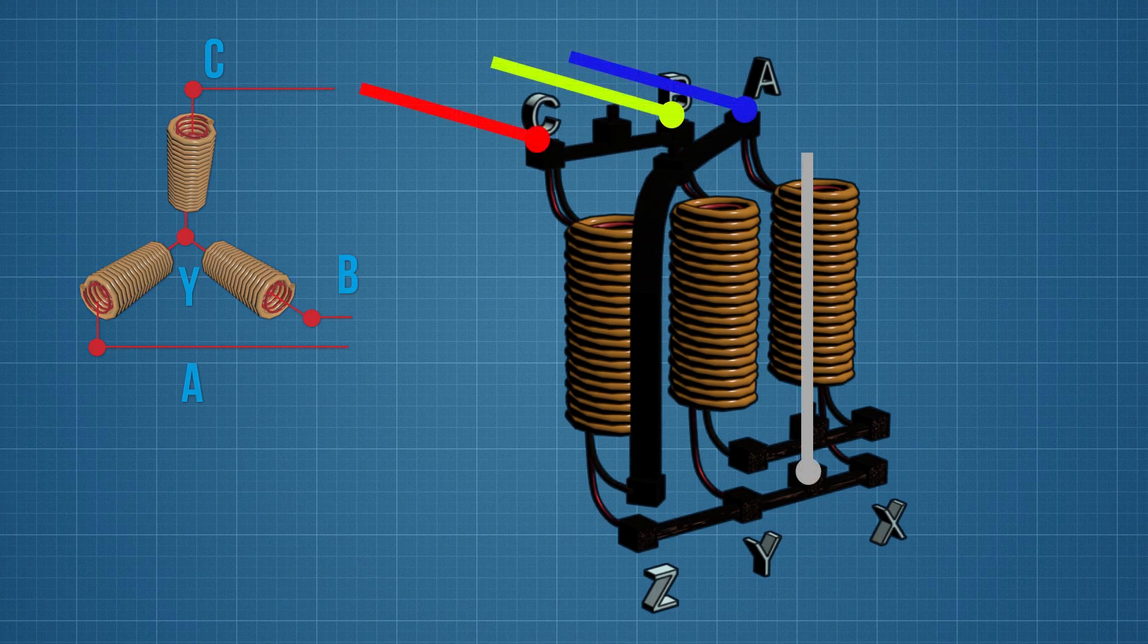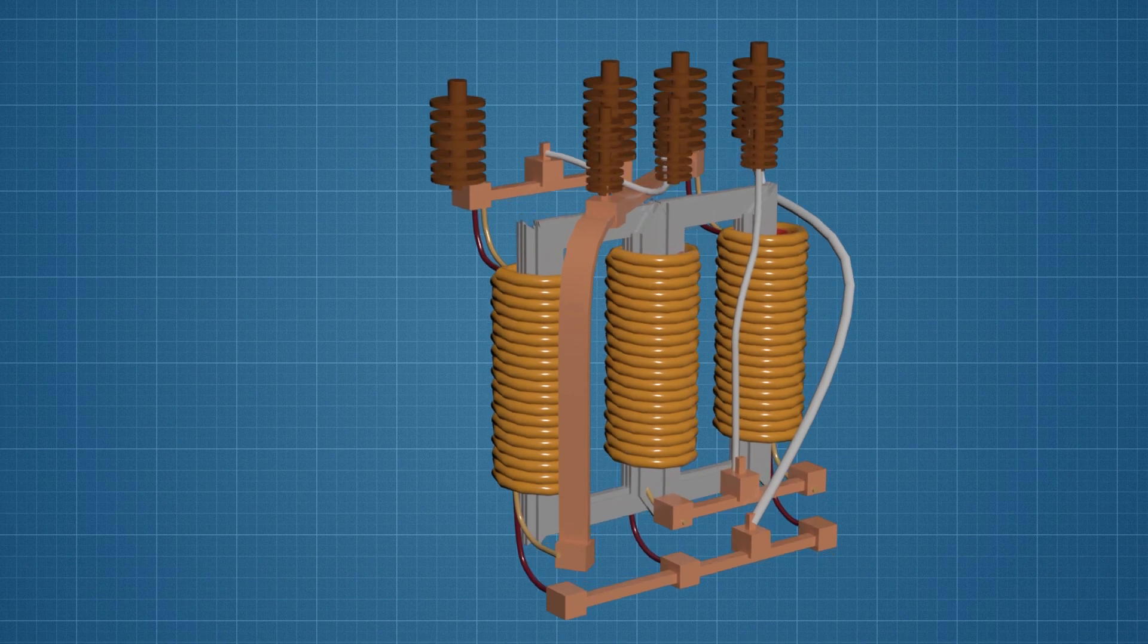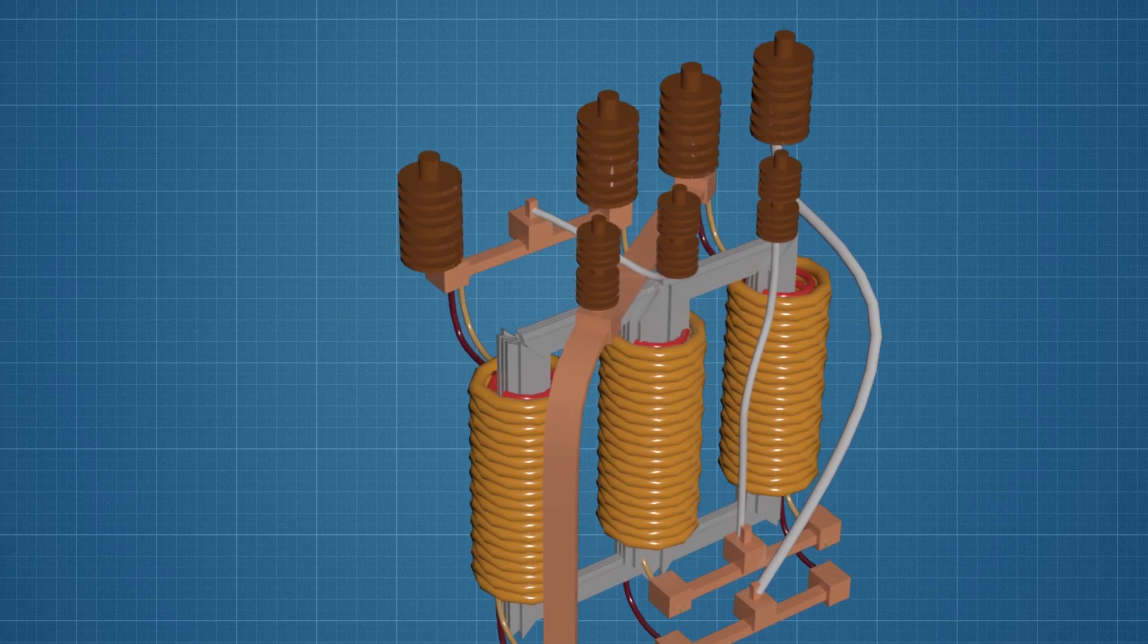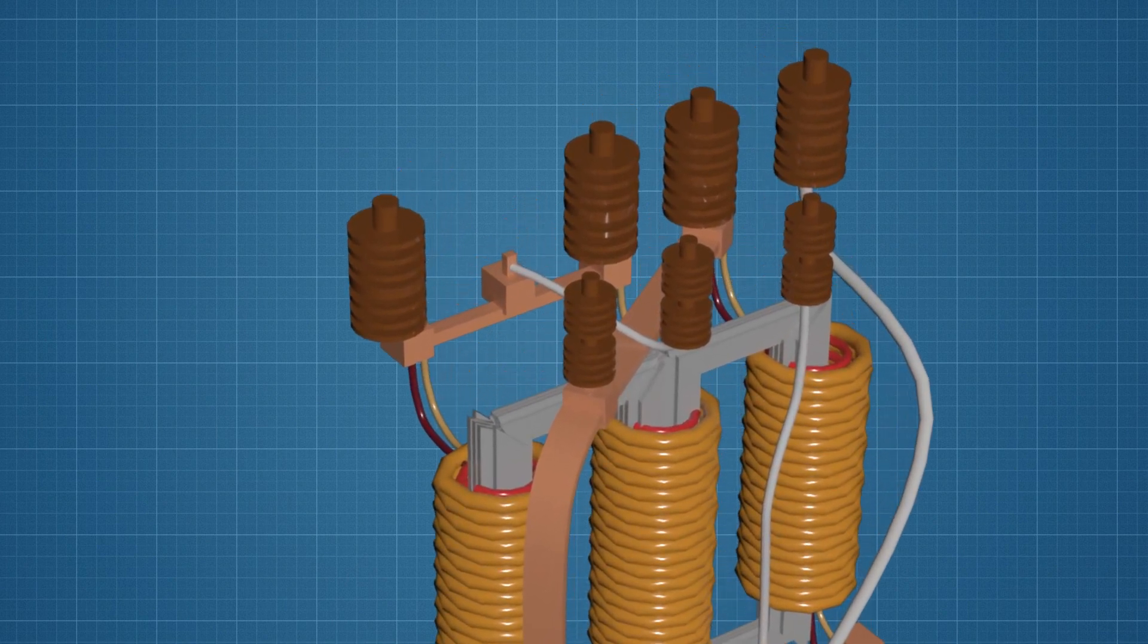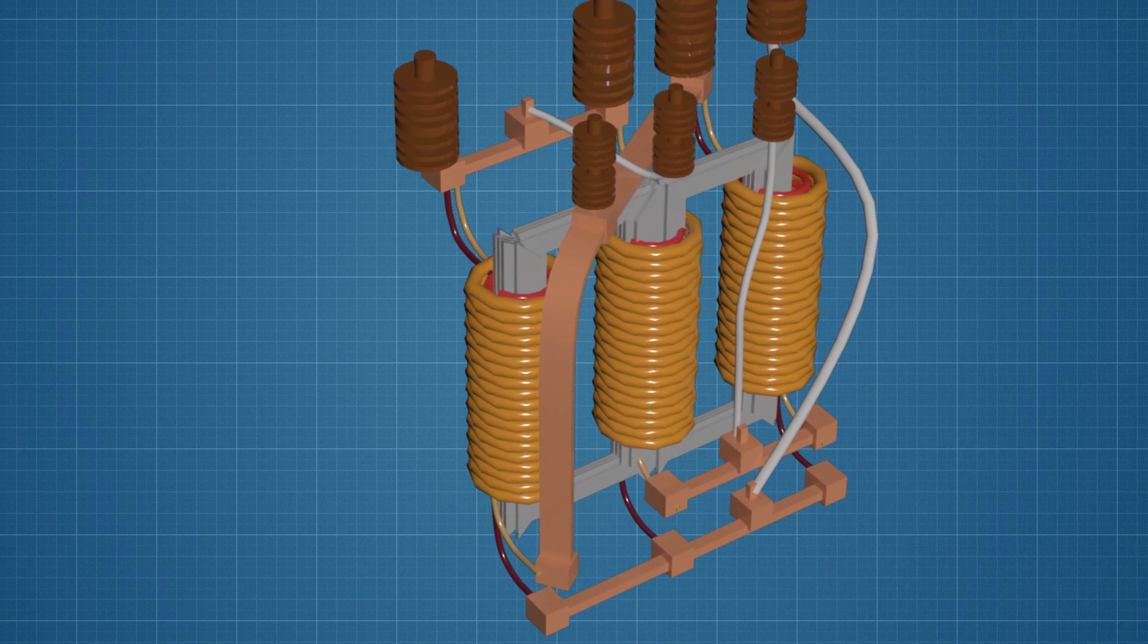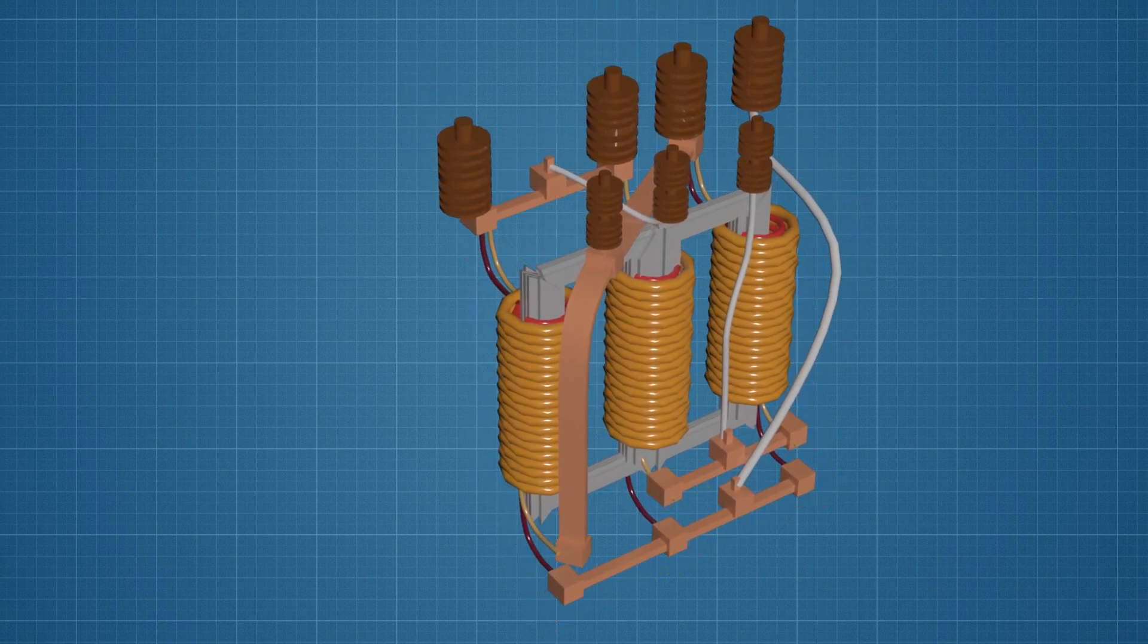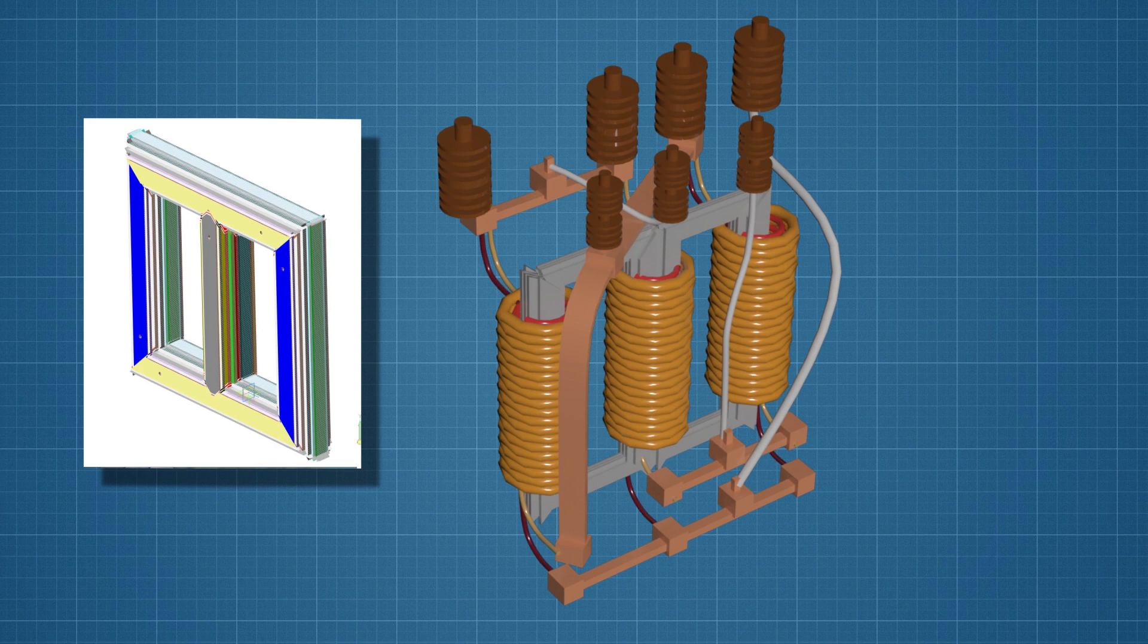High voltage insulators are installed where a live conductor passes through the grounded metal housing of the transformer. Insulators ensure mechanical fastening and insulation of the current-carrying conductor from adjacent conductors. A magnetic core consists of rods on which the windings are located, and a yoke connecting the rods into a common magnetic circuit.